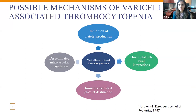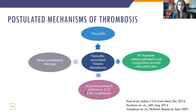Possible mechanisms of varicella-associated thrombocytopenia, reported since the 1980s: it can affect various steps — inhibit platelet production, cause immune-mediated platelet destruction, cause a coagulopathy state like DIC, and have direct platelet-viral interaction. Looking at possible mechanisms of thrombosis: it can cause vasculitis, direct endothelial damage, acquired protein S deficiency secondary to increased C4B complement, and transient increases in antiphospholipid and coagulation protein antibodies. These antiphospholipid antibodies are very transient and come back to normal after the viral prodrome has finished.